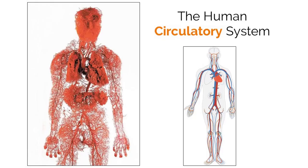Topic 6.2 is all about the circulatory system. This system is designed to move nutrients like oxygen around the body, and accomplishes this task through a muscular pump called the heart and numerous pathways that lead to every part of the body through arteries and veins.